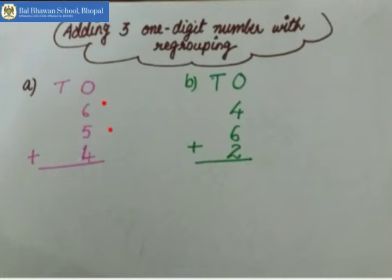Count after 6: 7, 8, 9, 10, 11. 11 ho gaya. Now one more number is 4. We will also add that. So count after 11, 4 times on your fingers.